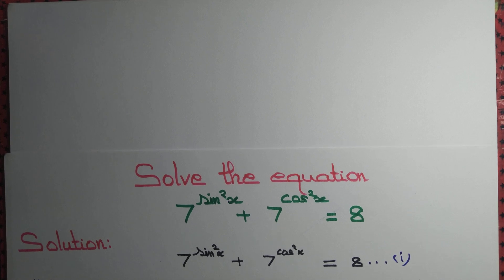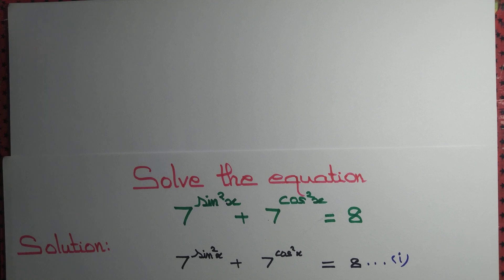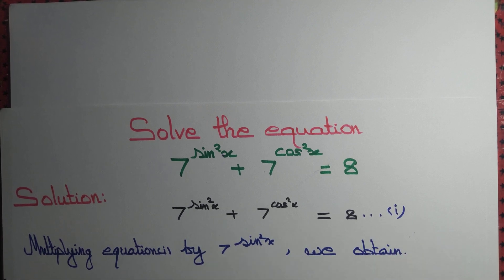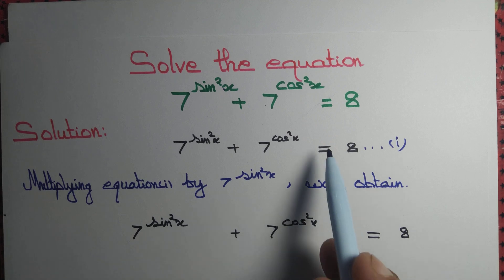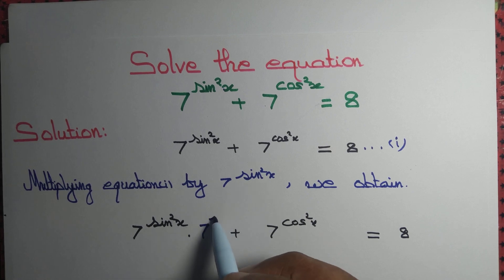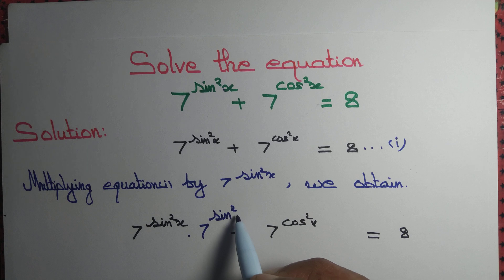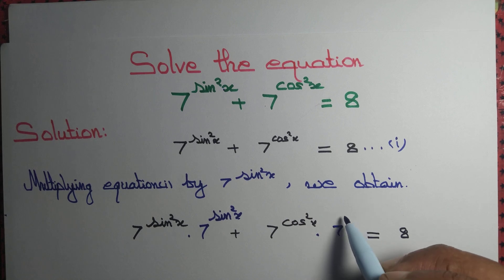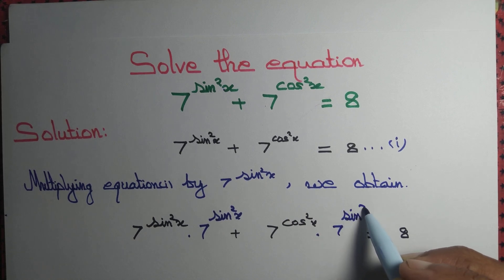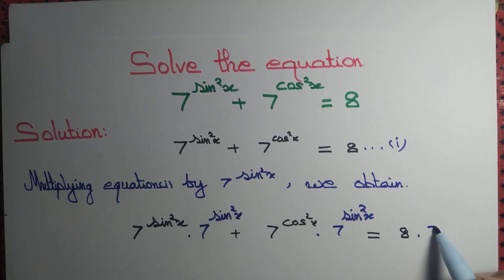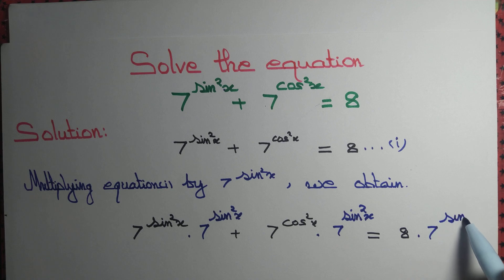It will be much easier if we simply multiply this equation by 7 to the power sine square x. So multiplying equation 1 by 7 to the power sine square x, every term on the left hand side is multiplied by 7 to the power sine square x, and so we multiply every term of the right hand side by 7 to the power sine square x as well.